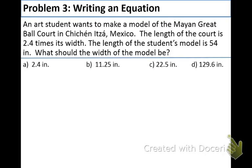Example three, we have an art student wanting to make a model of the Mayan great ball court in Chichen Itza, Mexico. Probably butchered that name, but there you go. The length of the court is 2.4 times its width. That's something important. Let's underline that or highlight it. Length of the court is 2.4 times its width. The length of the student model is 54 inches. That's also important. Length is 54 inches. What should the width of the model be? Well, first of all, we're looking for width in our variable. Let W equal width.